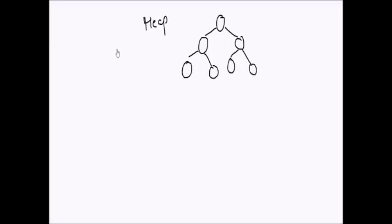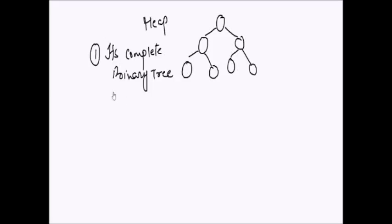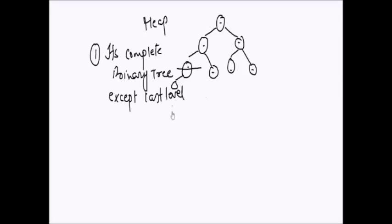Another property which heap satisfies is that it is a complete binary tree except from the last level. That means every node has two children in the intermediate levels except the last level — some nodes may have zero children. This is the property followed by heap.